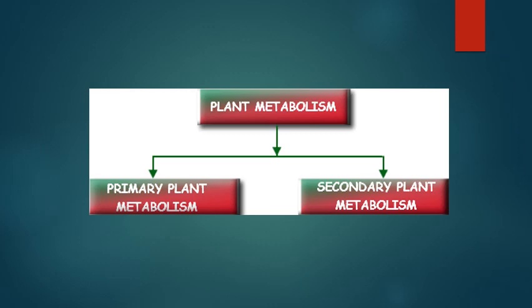Primary metabolites are widely distributed in nature. Examples include carbohydrates, proteins, fats, and nucleic acids. Whereas secondary metabolites are biosynthesized from the primary metabolites and are considered the end products of the primary metabolites. They are not present in all plants but are specific to certain plants or families.